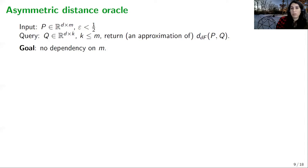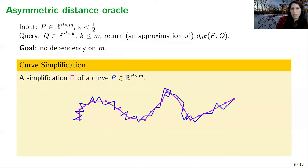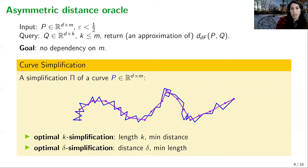One way to avoid dependency on m is to use curve simplifications. A simplification pi of a curve p is a shorter curve that is close to p — a good representation of p. We can talk about optimal k-simplifications, which are curves of length k with minimum distance to p, or optimal delta-simplifications, which are curves with the minimum number of vertices and distance at most delta to p.